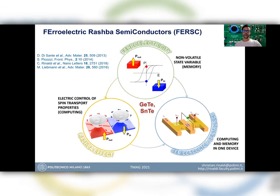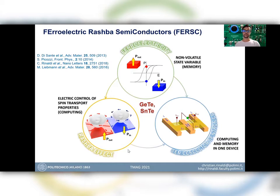To do that, ferroelectric Rashba semiconductors are ideal candidates because they merge three important ingredients. The first is ferroelectricity, which represents a non-volatile state variable modifiable using electric fields. In germanium telluride, ferroelectricity is able to modify the band structure in terms of spin properties — it is responsible for creating a giant Rashba effect whose spin chirality can be switched from clockwise to anti-clockwise depending on the direction of the polarization vector. Together with the semiconductivity and silicon compatibility of the compound, this could open the way to several advances.